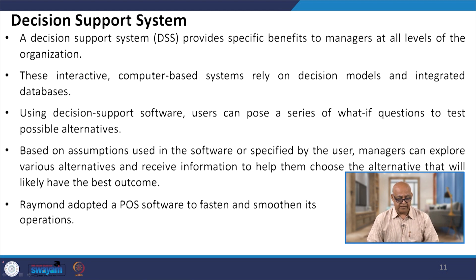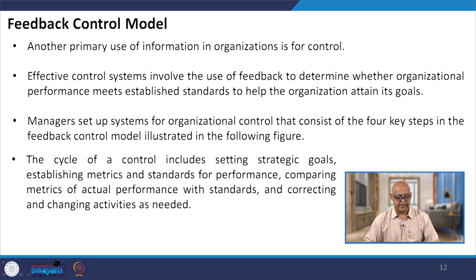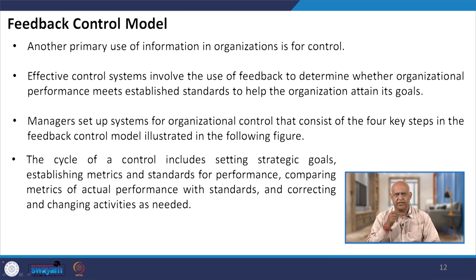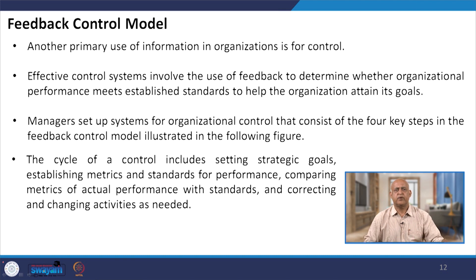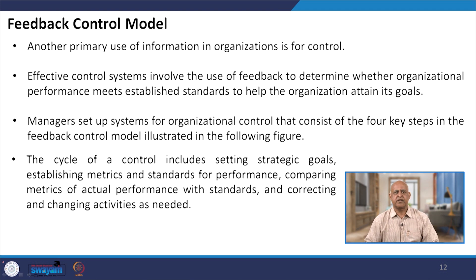Another primary use of information in organizations is for control. Effective control systems involve the use of feedback to determine whether organizational performance meets established standards to help the organization attain its goals. Managers set up systems for organizational control consisting of four key steps in the feedback control model. The cycle includes setting strategic goals, establishing metrics, comparing actual performance with standards, and correcting activities as needed.